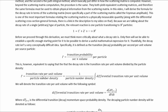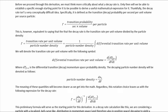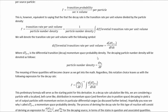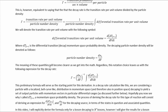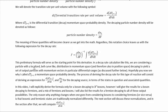We can take the transition rate per unit volume to the differential transition rate per unit volume, denoted with this symbol. This is the differential transition probability density, where the derivative with respect to volume and time gives the rate per unit volume. More specifically, d tau is the differential transition momentum space probability density, so the differential refers to outgoing momentum differentials. The decaying particle number density will be denoted accordingly. This notation leaves us with an expression for the decay rate as an integral over the differential with respect to momentum differentials.